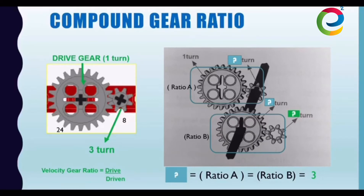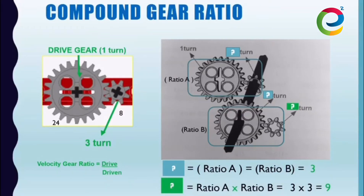As we learned last lesson, the ratio of both sets of gears are the same — 24-tooth gear divided by 8. But when you compound them, you place them together and link them through an axle, the speed of the final driven gear changes. You can see that the driven gear of set A is linked to the driving gear of set B through an axle. We calculate how many times the driven gear of set B has rotated. Using the formula 3 times 3, you'll find that the driven gear of set B will rotate 9 times.